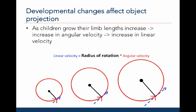Now let's think about how development affects object projection. As children grow, their limb lengths increase, and the radius of rotation increases correspondingly, which increases linear velocity. In addition, increased muscle strength during development will also increase linear velocity. Since we already know that increased angular velocity increases linear velocity, let's focus now on how growth increases the radius of rotation.